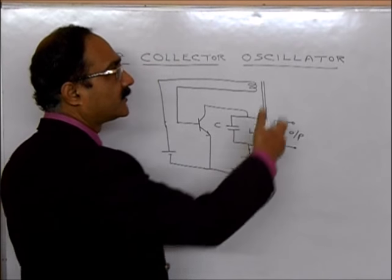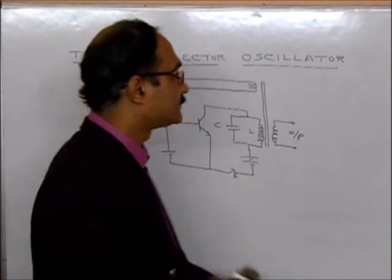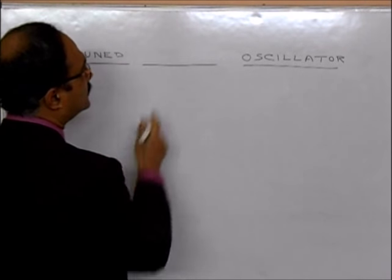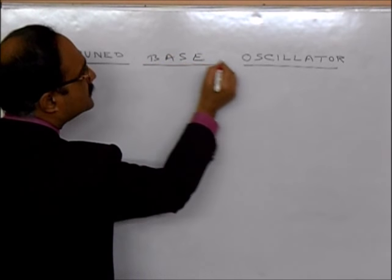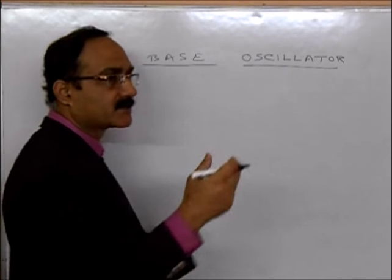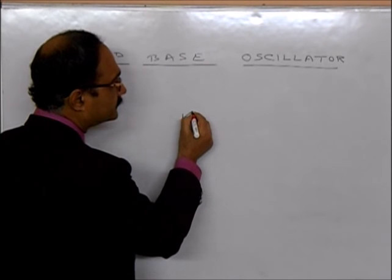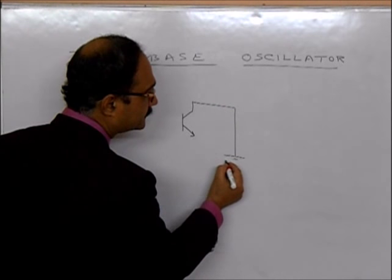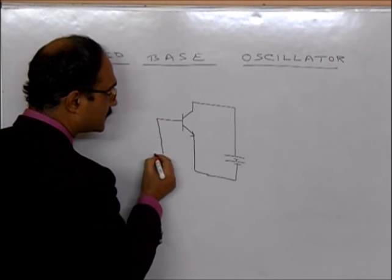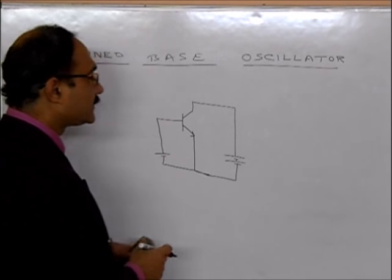This is one way of making a real-life oscillator. There is another type called the tuned base oscillator. For a tuned base oscillator, you again draw the transistor with its biasing, but this time the LC circuit is placed at the base of the transistor.